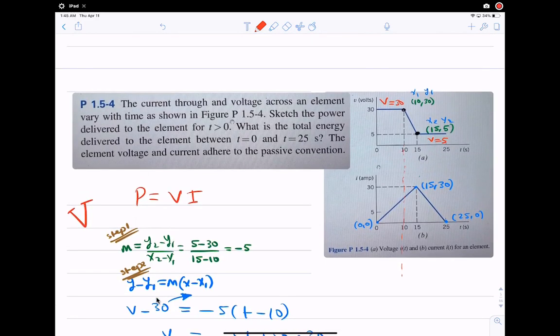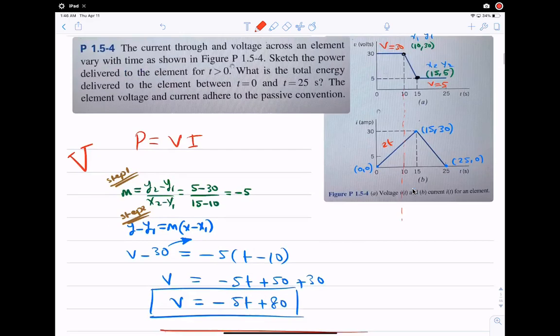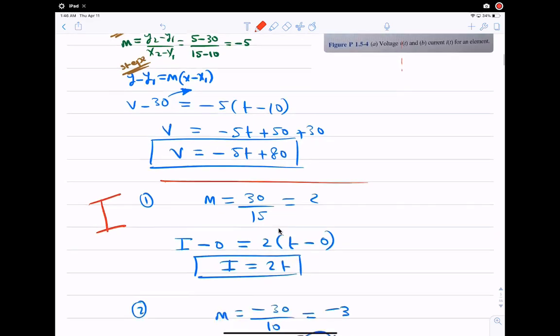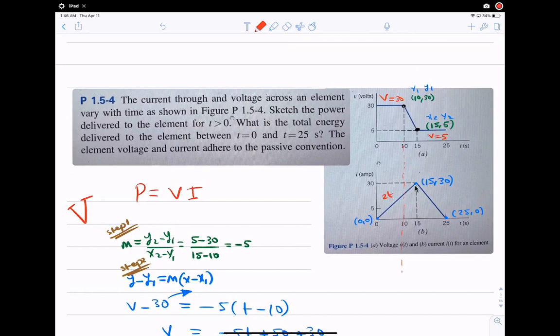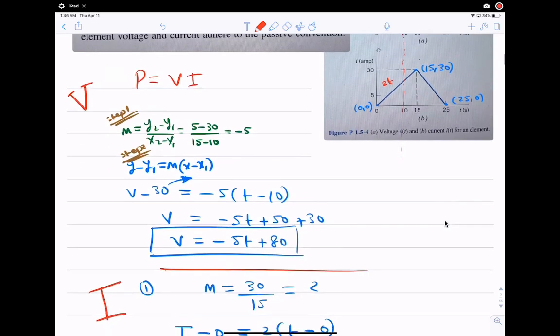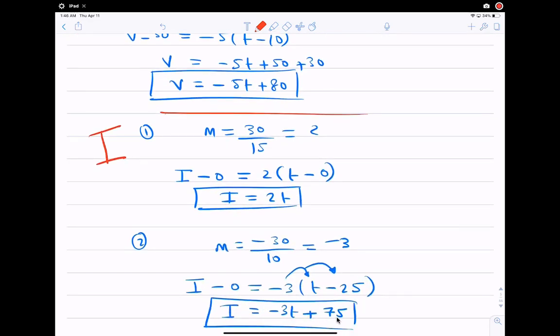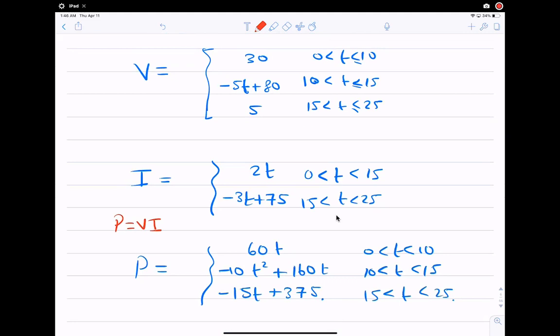If I look at the sketches, I know that this straight line from 0 to 10 will be multiplied by this equation, which we said 2t. And then from 10 to 15, this descending line would be multiplied by this rising line, which is negative 5t plus 80. I'm going to multiply it by the 2t, still the 2t, because until here I'm talking about the 2t. Now the constant 5, I'm going to multiply it by the descending current line, which is negative 3t plus 75.